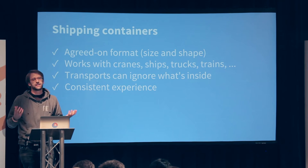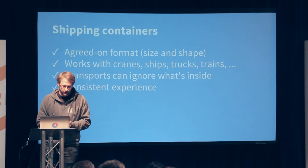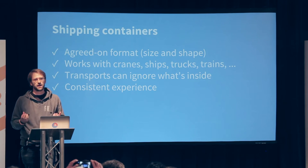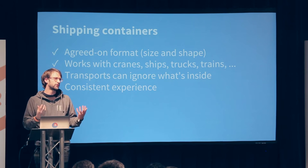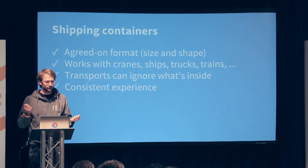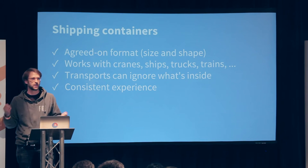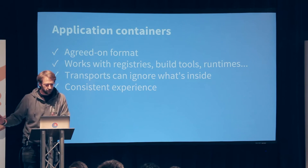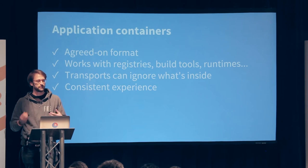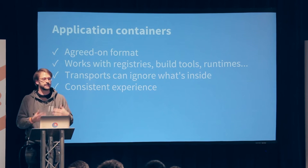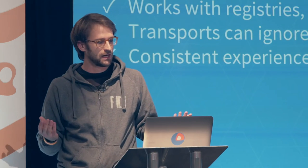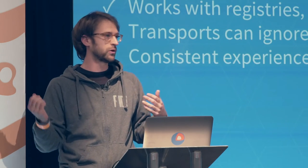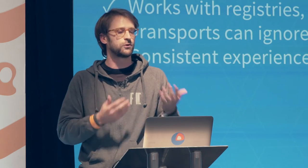First, let's look at what the shipping container does right — where did this metaphor come from in the first place? The basic idea is that it's standardized on a particular size and shape. This is very powerful because it means you can take that container and ship it around the world, and all these different systems — ships, cranes, trucks, trains — that understand that shipping container can work with it. They don't really care what's inside the container; they just understand this agreed-upon size and shape. Similarly, in the application container world, you have this container which you build, and in principle you can transport it and run it in different environments and get a consistent experience. If you build a Docker image, you can be pretty confident that if you send it to someone on the other side of the world and they run it using Docker, they'll get the same experience.